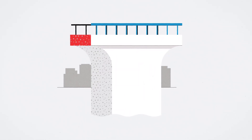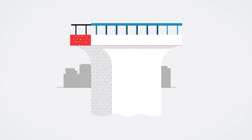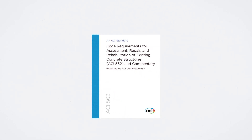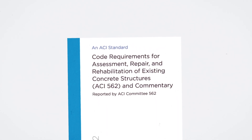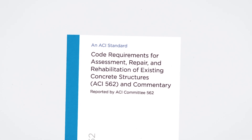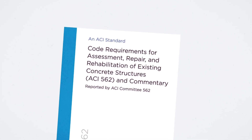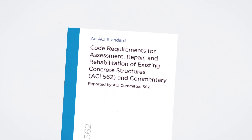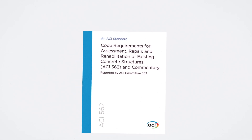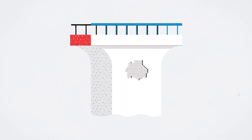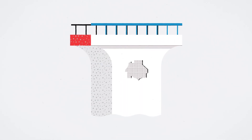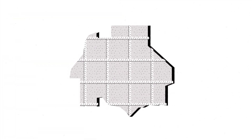Developed for design professionals involved in the assessment of existing concrete structures, ACI 562 – Code Requirements for Assessment, Repair and Rehabilitation of Existing Concrete Structures is the first code written specifically for repairing reinforced concrete, including requirements for the assessment of damage and deterioration and the design of appropriate repair and rehabilitation strategies.